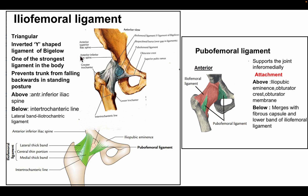The iliofemoral ligament is triangular and inverted Y-shaped; it is also known as the ligament of Bigelow and is one of the strongest ligaments of the body. Its function is to prevent the trunk from falling backwards in the standing posture. Above it is attached to the anterior inferior iliac spine, and below to the intertrochanteric line. It has a lateral thick band (also known as the iliotrochanteric ligament), a medial thick band, and a central thin portion.